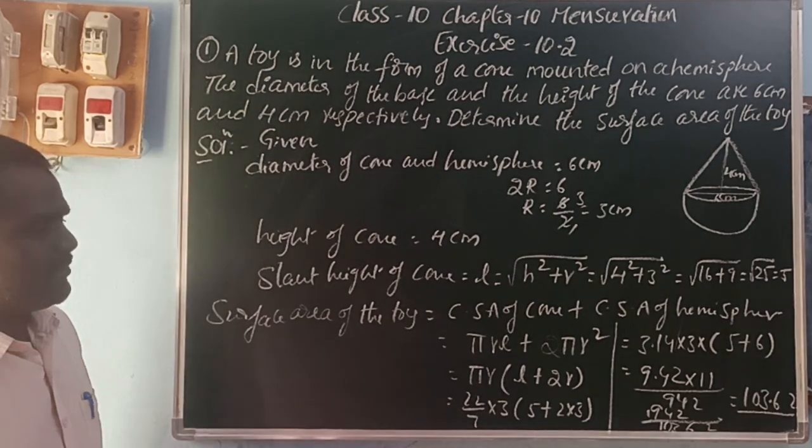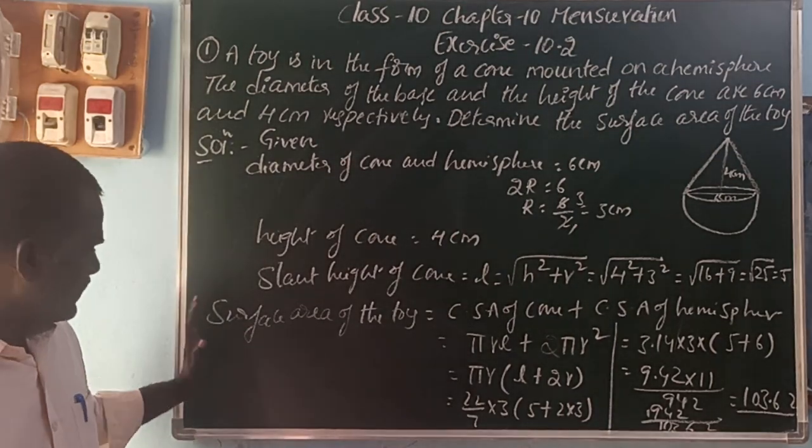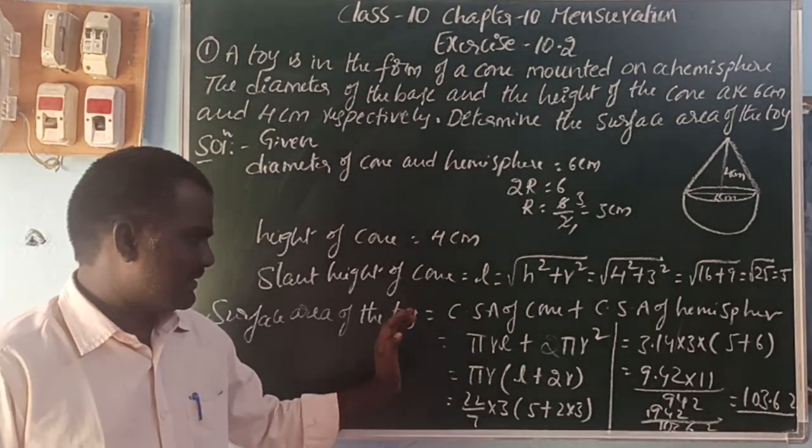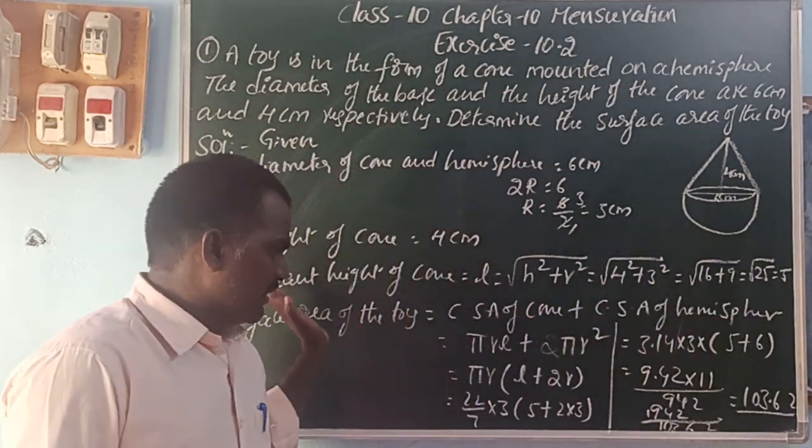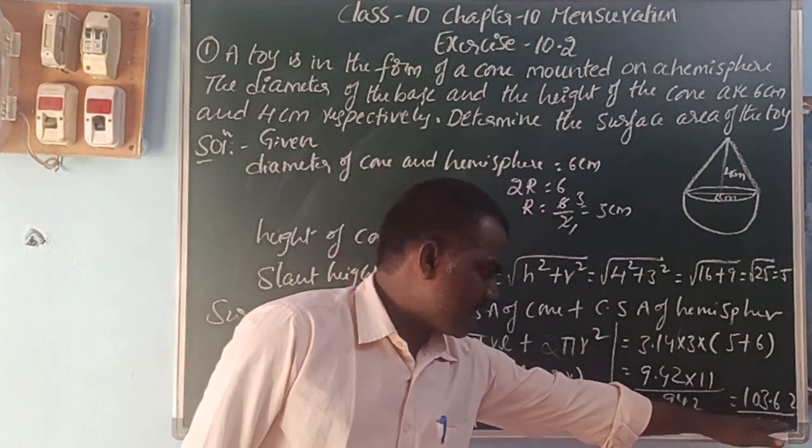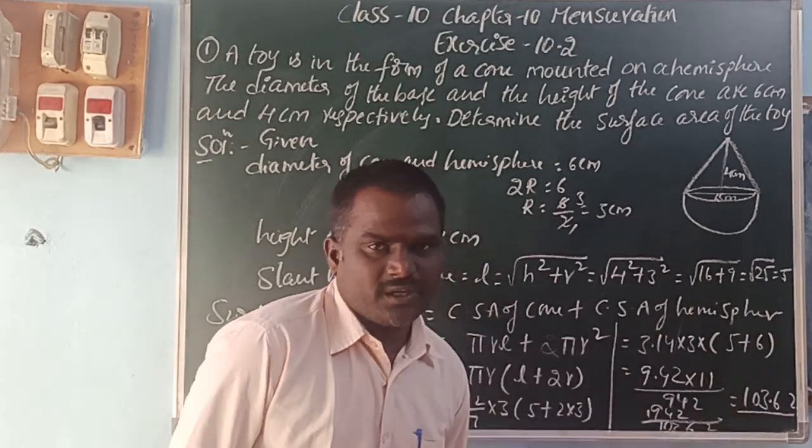The surface area of the toy is equal to the surface area of cone plus the surface area of the hemisphere. So the toy's surface area is 103.62 centimeter square.